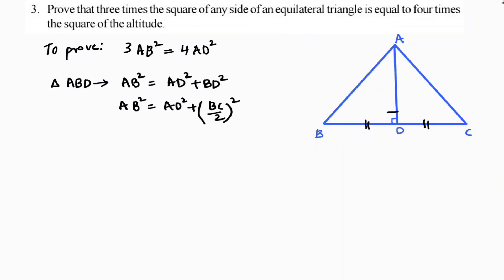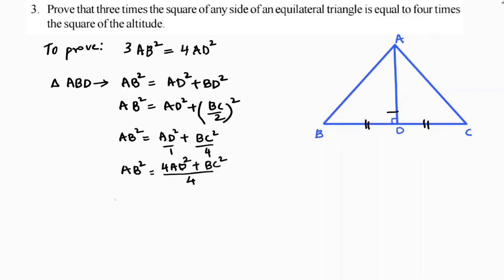Now BD can be written as half of BC, so AB² equals AD² plus BC²/4. Taking LCM as 4: 4 AB² equals 4 AD² plus BC².